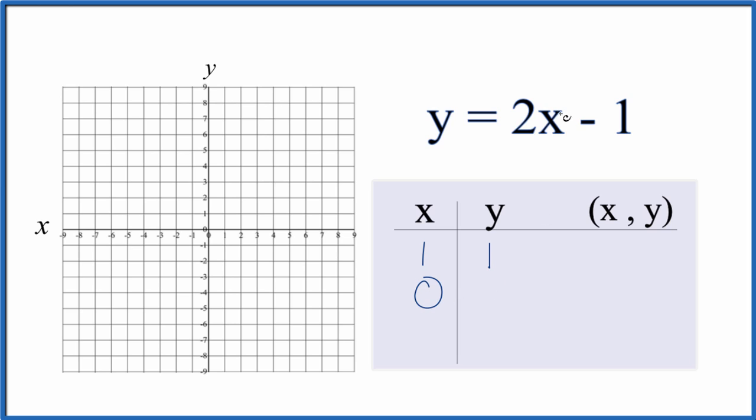Let's try 0. If x is 0, 2 times 0, that's just 0. So y equals negative 1.